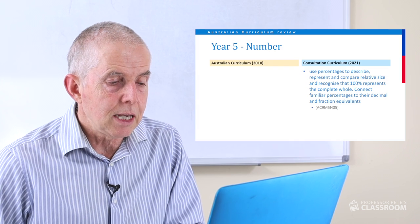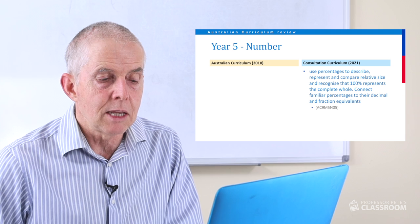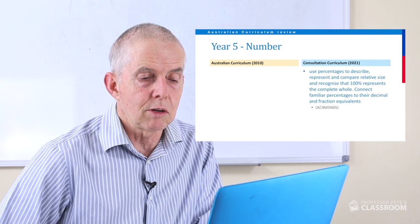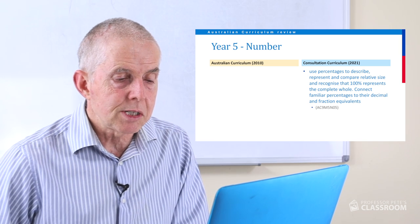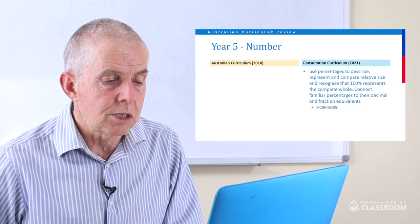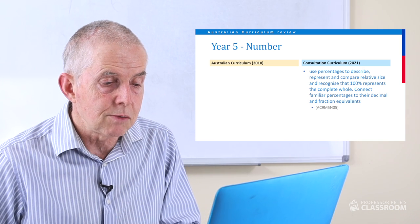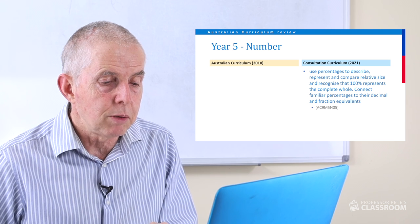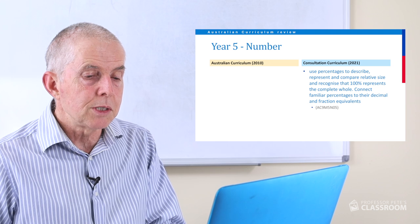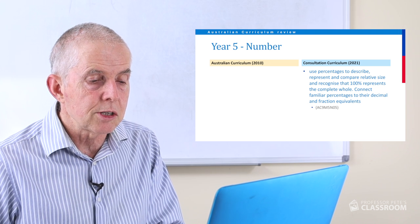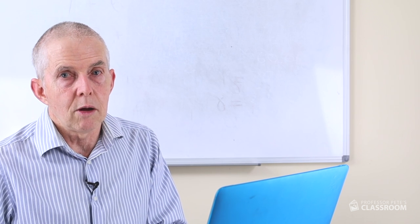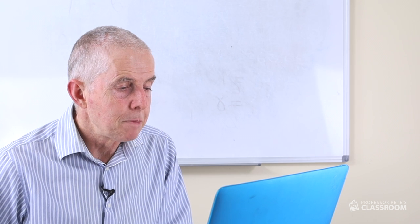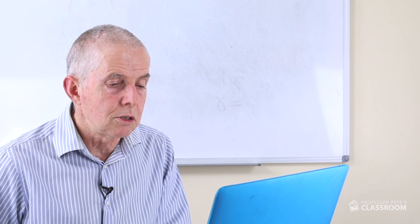Number five is a new content descriptor — there was no equivalent in the existing curriculum. We have: use percentages to describe, represent and compare relative size and recognise that 100% represents the complete whole. Connect familiar percentages to their decimal and fraction equivalents. There's a lot there — lots of activities that could be done. This is a valuable addition to the curriculum.